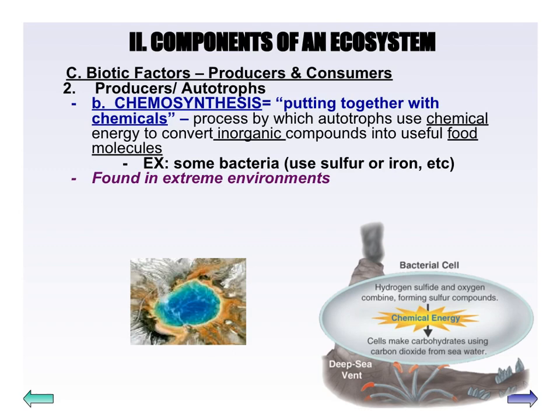For those of you that did the last Ed Puzzle Notes, remember we learned about producers or autotrophs. Those are things like plants, trees, bushes, algae that can make their own food inside their cells, so they do not have to eat.